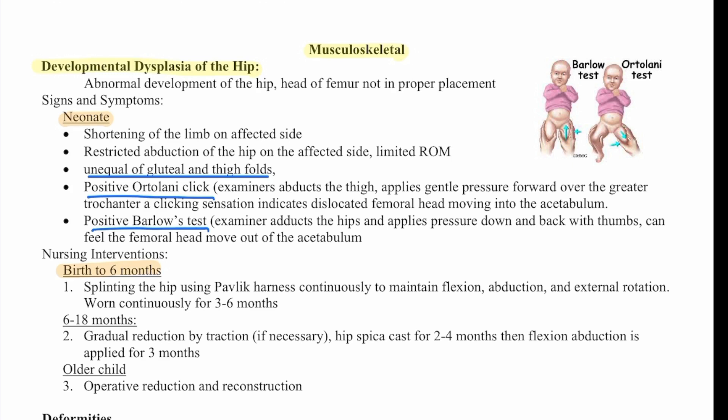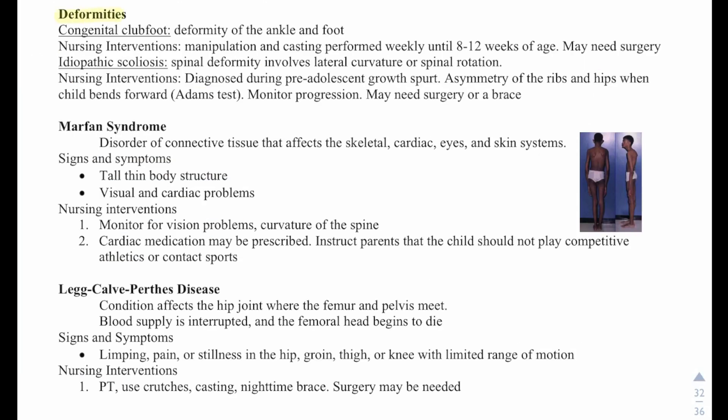At six to 18 months, there will be gradual reduction by traction if necessary, a hip spica cast for two to four months, then flexion and abduction applied for three months. The older child may need an operative reduction and reconstruction.